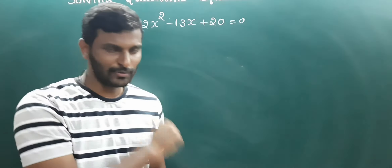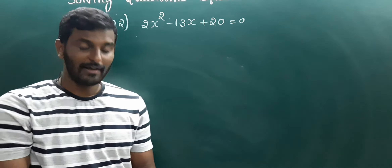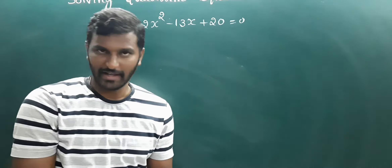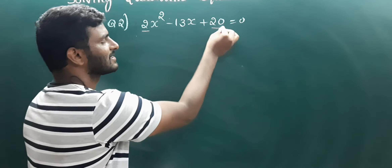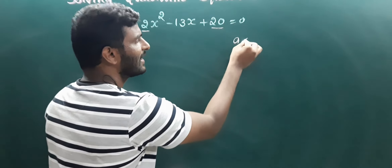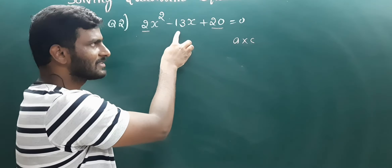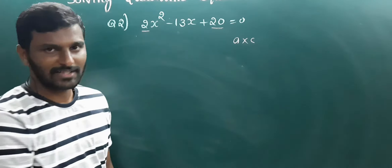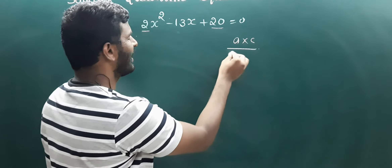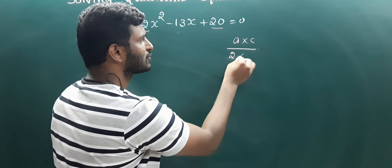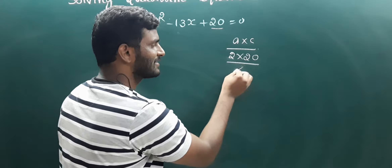Here also there are two solutions. First, we have to take the first and last number, that is A into C. The A value is 2, the B value is minus 13, and the C value is 20. Hence A into C is 2 into 20, which equals 40.